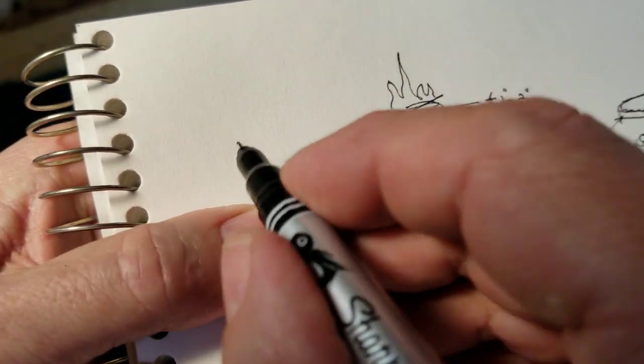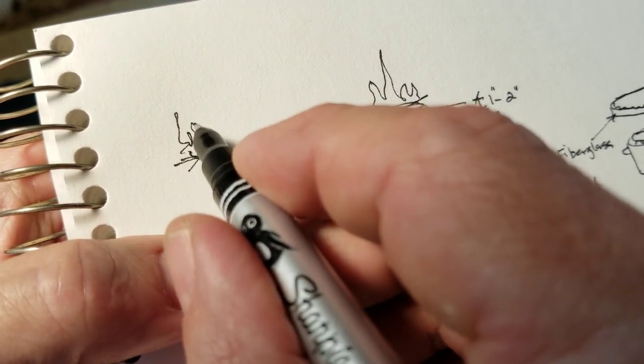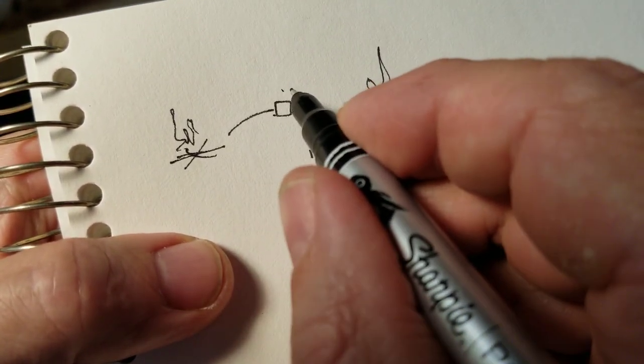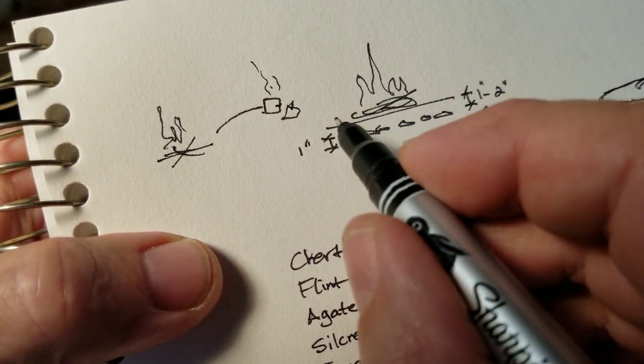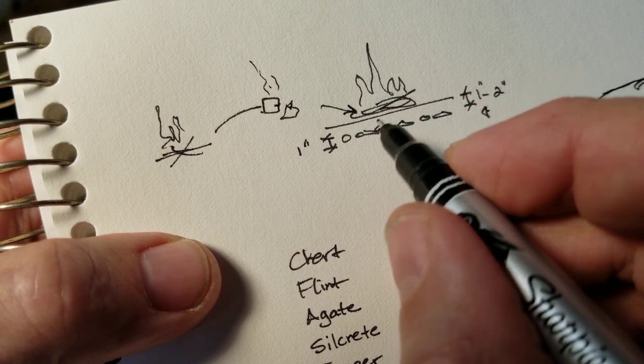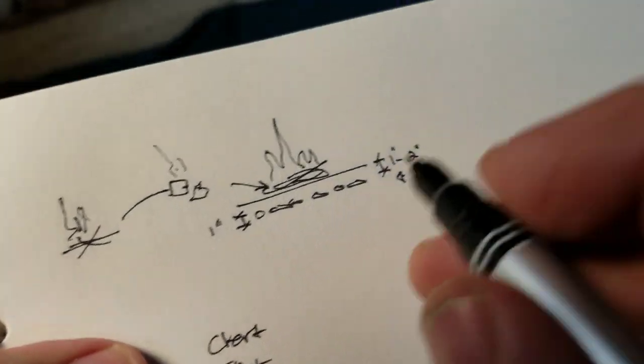Or you can build a fire over here and then transfer hot coals. It looks like a marshmallow. Transfer hot coals here and not burn. Just transfer a layer of hot coals. That's one way.